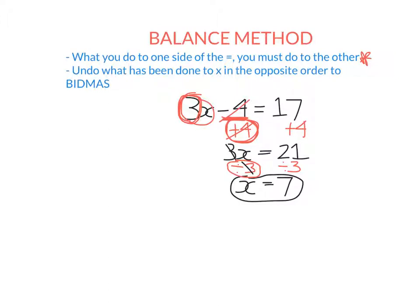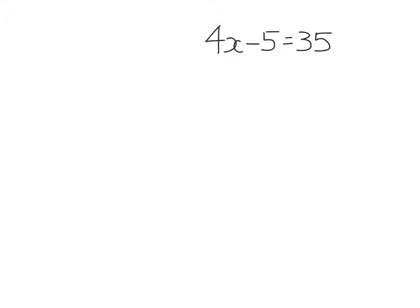Let's look at another example. Please pause and copy this down if you need. So let's have 4x minus 5 equals 35. The first thing I need to undo is the minus 5, because it was the last thing done to x. I undo that by adding 5 to both sides. The next line is just 4x equals 40. Then I undo timesing by 4 by dividing by 4, and I get my solution x equals 10.